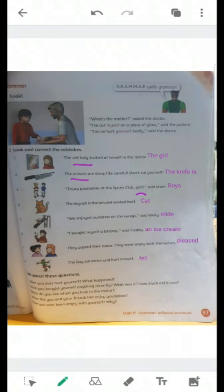Number four, the dog sat in the sun and washed itself. Is it a dog? Of course not, it's a cat. Number five, we enjoyed ourselves on the swings said Molly. They are playing on a slide, not swings. Number six, I bought myself a lollipop said Freddy. It's an ice cream, not a lollipop.